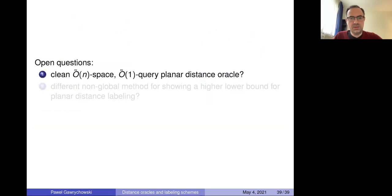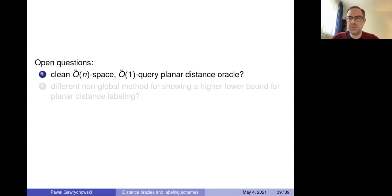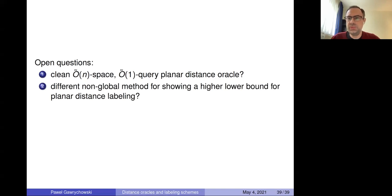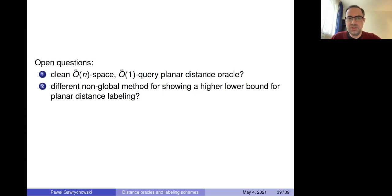Let me close with two open questions. For planar distance oracles, we are still far from understanding the full picture — it would be nice to have O(n · polylog) space with polylog query time, meaning n^(1+o(1)) space. For the labeling scheme lower bound for unweighted planar graphs, we need a different proof technique: the existing one doesn't use the distributed aspect and just argues about total label length, which may not be the right approach. So those remain open. That's all I have — thanks for listening.